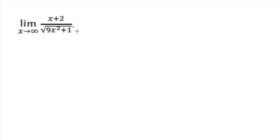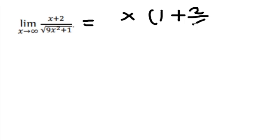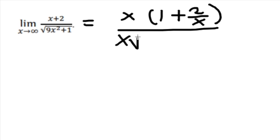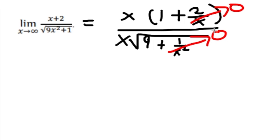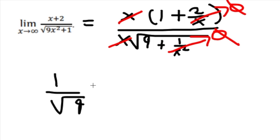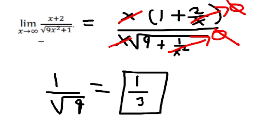For the next problem, the limit is as x approaches infinity with a square root. We factor out an x from the top and bottom. Since it's under the square root, we're left with 9 inside. The terms with x in the denominator go to 0. The x's cancel, and we are left with 1 over the square root of 9, which equals 1 third. So as x approaches positive infinity, the y value will be 1 third.